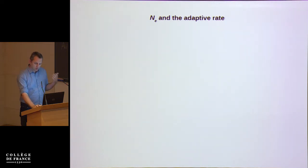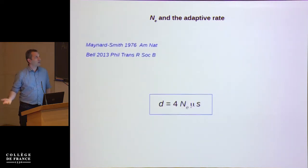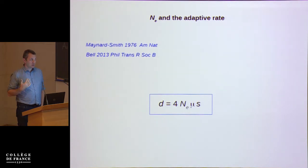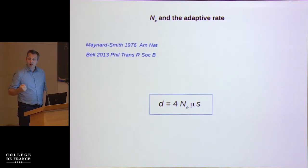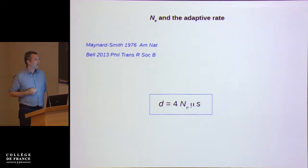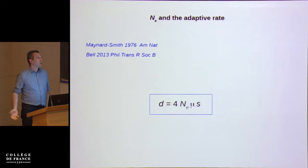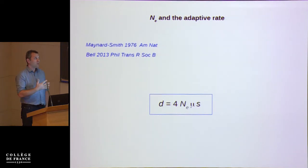This was formulated by John Maynard Smith a long time ago and is also a key aspect of the theory of evolutionary rescue. If you think of a very simple model with a constant flux of beneficial mutations of selection coefficient S, independently arising in populations of size N_E, the adaptive rate is expected under some conditions to be proportional to the N_E × mu × S product — linearly related with N_E.